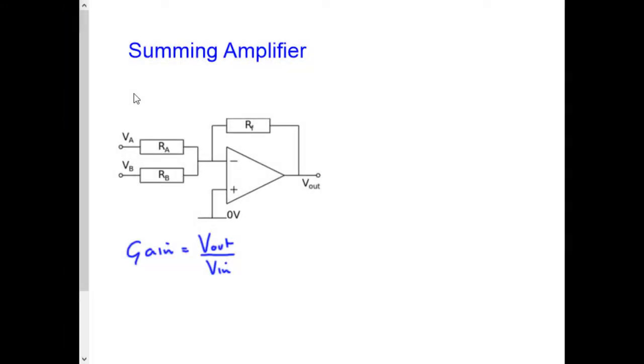This video looks at calculating the output voltage for a summing amplifier. I have a current IA flowing into the input resistor RA due to the input voltage VA.